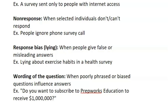Next up we have response bias — when people give false or misleading answers. Sometimes it's not explicit lying, but their answers are prone to some sort of bias. For example, if you were reviewing our YouTube channel but you're a friend of mine and know me in person, you'd have response bias because of that personal relationship.